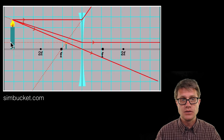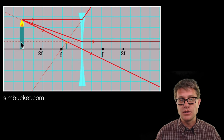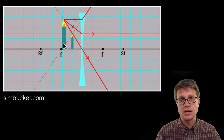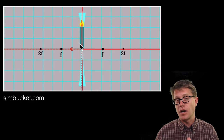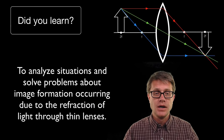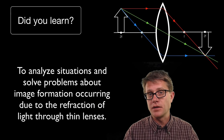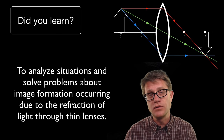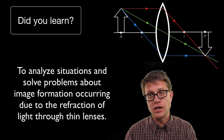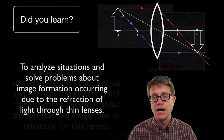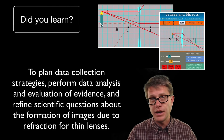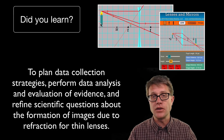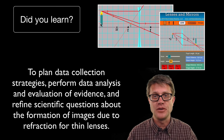We can check that again in the simulation: with the object on the left side you can see the virtual image on the same side. As we approach the focal point, the image gets bigger and bigger, but it is always upright and virtual in nature. So did you learn to use ray diagrams for both converging and diverging lenses? The caveat is that once you move inside the focal point on the converging lens, it gets a little tricky. Could you plan data collection and use a simulation or actual lenses to figure out where the images are? I hope so, and I hope that was helpful.